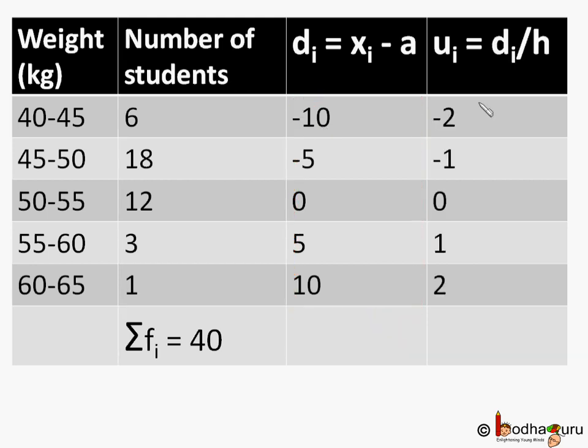So let ui equal to di by h, where h is the class size. h equal to 45 minus 40, which is 5 is the class size.